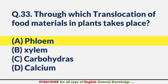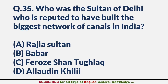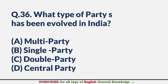When does relative humidity decrease? — Answer B: With increased temperature. Who was the Sultan of Delhi reputed to have built the biggest network of canals in India? — Answer C: Feroz Shah Tughlaq. What type of party system has been evolved in India? — Answer A: Multi-party.